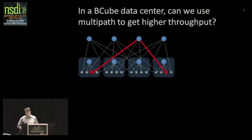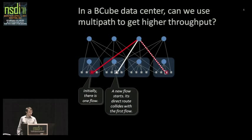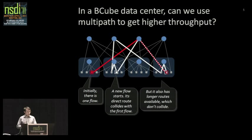Here's a very tangible example — a picture of a B-cube data center. We have one flow active, the red flow, using a certain path. Then a new flow wants to start between two hosts, but its direct route happens to clash with the first flow. However, this B-cube has a very richly connected topology, and there are other paths available which wouldn't clash. So if we have multipath, is there some way we can use that to make more efficient use of the network?